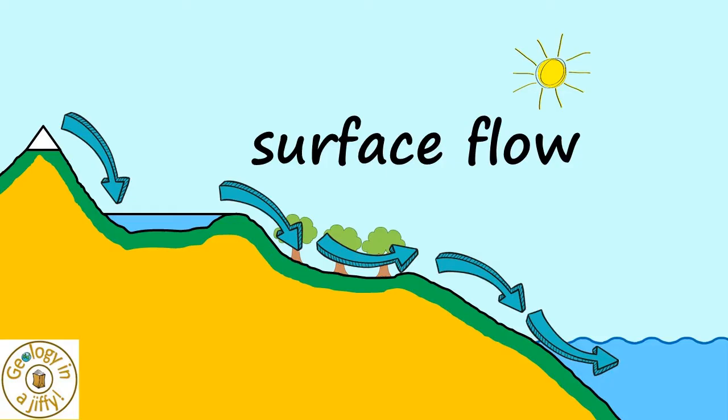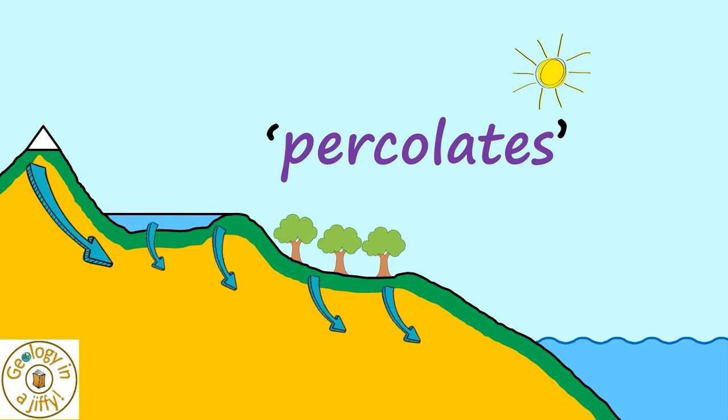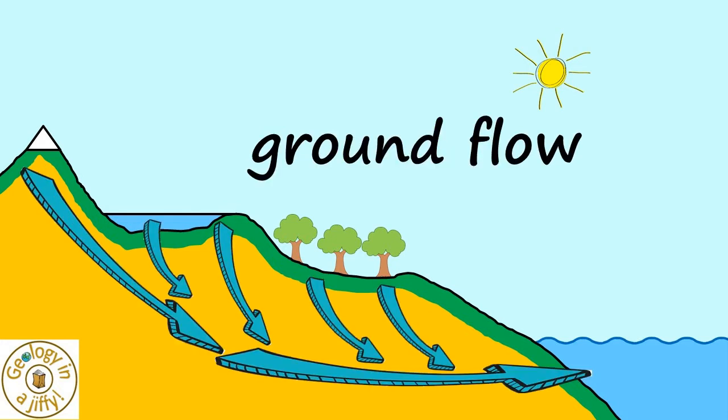Alternatively, instead of surface flow, there could be ground flow, which happens when the water percolates into the ground, forming the ground flow which flows towards the sea.